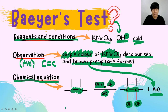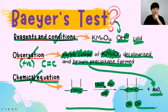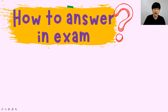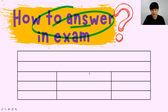Remember the five things: name, function, reagent and condition, observation, and chemical equation — make sure you know all five for every test. The most important question is how to answer chemical tests in the exam. The easiest way is to use a table that includes all five things.